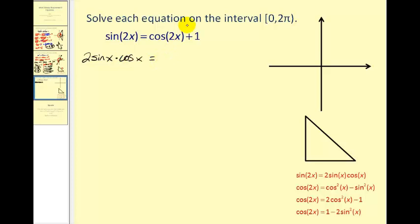Now for cosine two x there's three different identities to choose from. The one that stands out for me is this third one because notice we have cosine two x equals two cosine squared x minus one. Notice there's a plus one in the original equation. So those two will simplify out if I use this identity.